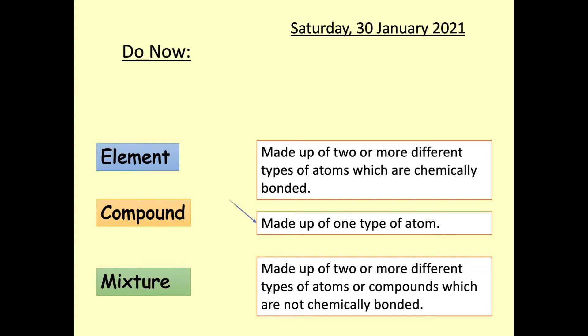The answers are as follows. An element is made up of one type of atom. A compound is made up of two or more different types of atoms which are chemically bonded. And a mixture is made up of two or more different types of atoms or compounds which are not chemically bonded.